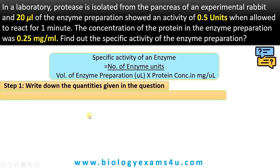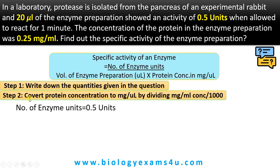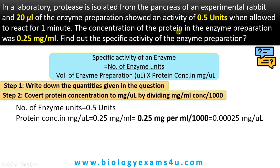Step 1: write down the quantities given in the question. Step 2: convert protein concentration to mg per microliter by dividing the mg per ml concentration by 1000. Number of enzyme units is 0.5 units. Protein concentration is given as 0.25 mg per ml, so we divide by 1000 to get 0.00025 mg per microliter. Volume of enzyme preparation is given as 20 microliters.